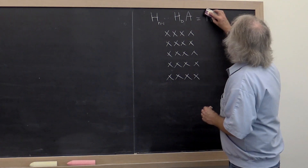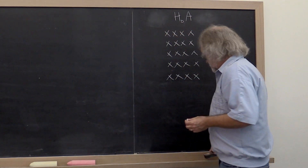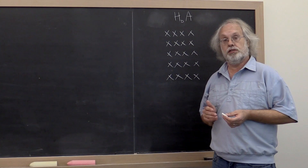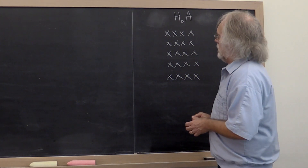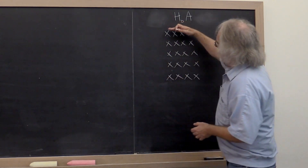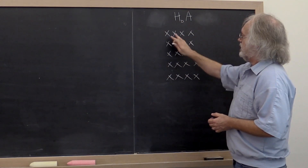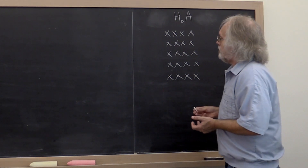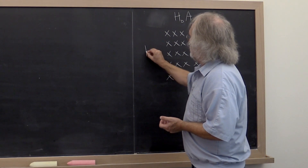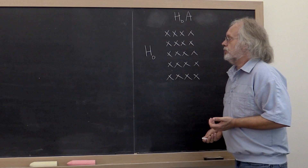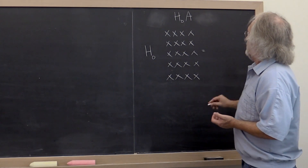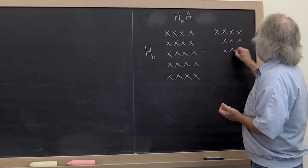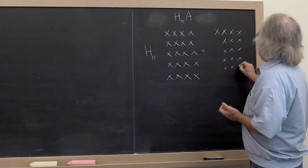Let's look at the first step towards that. We've spent some time talking about Householder transformations, so maybe Householder transformations are the answer. Here we have depicted a 5 by 4 matrix where each of these x's denotes an element of the matrix. What we're going to do is compute a Householder transform such that this matrix ends up with zeros below the first entry.